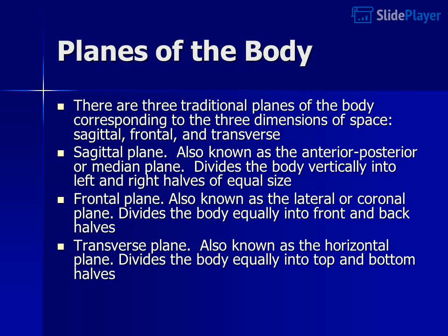Planes of the body. There are three traditional planes of the body corresponding to the three dimensions of space: sagittal, frontal, and transverse. The sagittal plane, also known as the anterior-posterior or median plane, divides the body vertically into left and right halves of equal size. The frontal plane, also known as the lateral or coronal plane, divides the body equally into front and back halves. The transverse plane, also known as the horizontal plane, divides the body equally into top and bottom halves.